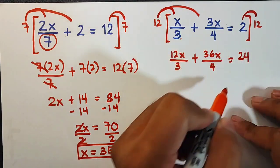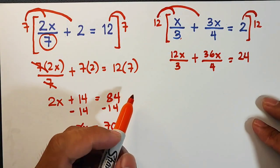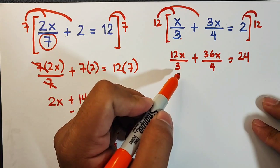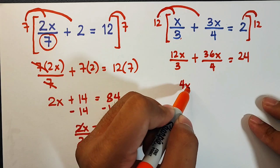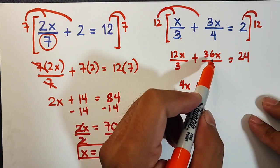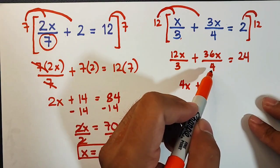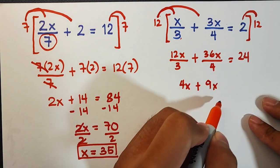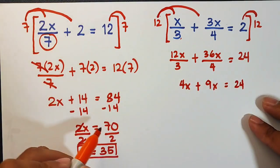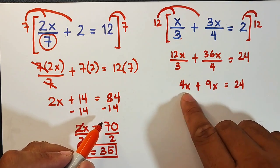So what's next, we will simplify: 12x over 3, so this is 4x, plus this one, 36x over 4, that equals 9x, is equal to 24. And as you can see, we can combine these terms.